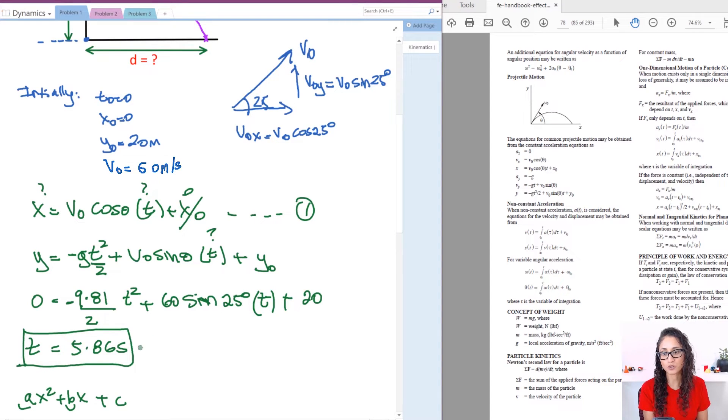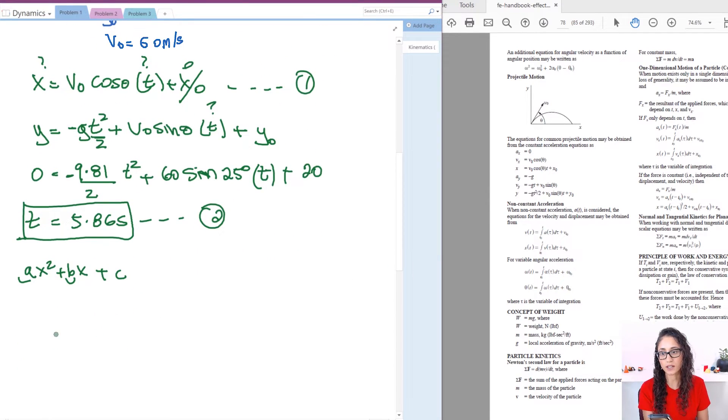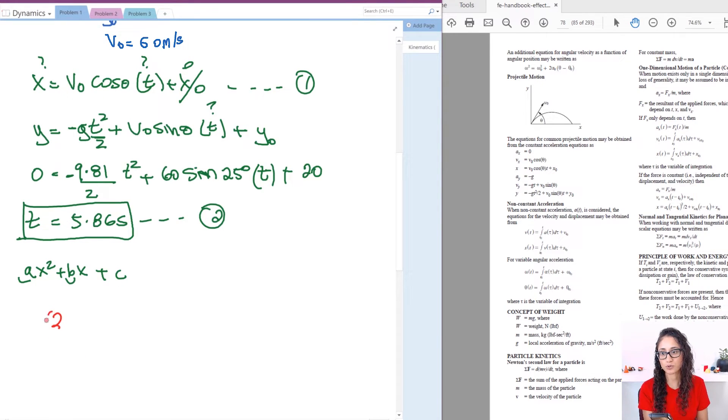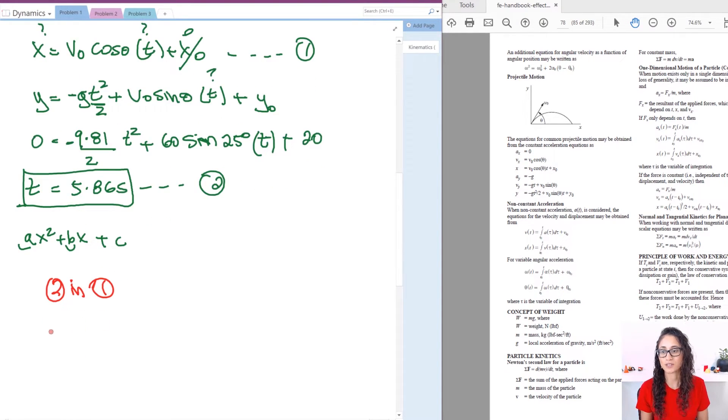Now we can use this. Let's call this two. And we can go back to equation one and plug it in. But let's actually pick a different color. Let's do red. So we have two in one. So let's write x is equal to v naught, which is 60 cosine 25 degrees times t, which is 5.86.